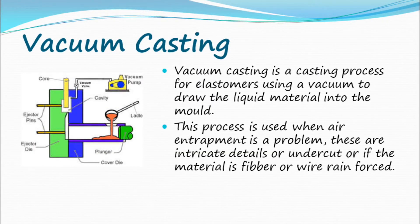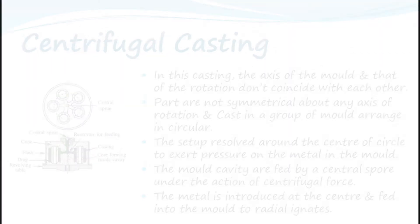Vacuum casting: vacuum casting is a casting process for elastomers using a vacuum to draw the liquid material into the mold. This process is used when air entrapment is a problem, or when there are intricate details, undercuts, or if the material is fiber or wire reinforced.